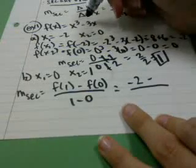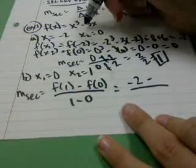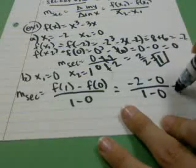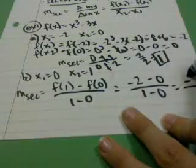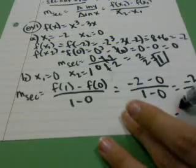f of 0, 0 cubed is 0, minus, 3 times 0 is 0. 0 minus 0 is 0. And I have 1 over 0 on the bottom. So, I have negative 2 over 1, which equals negative 2.